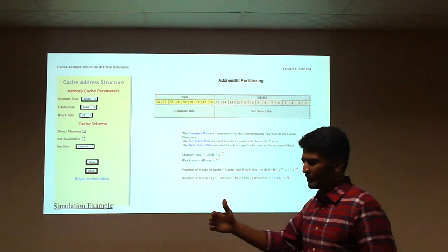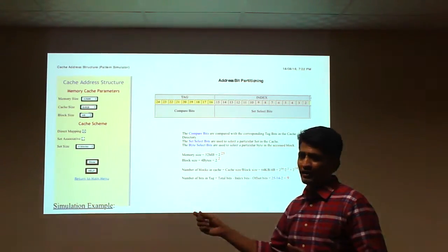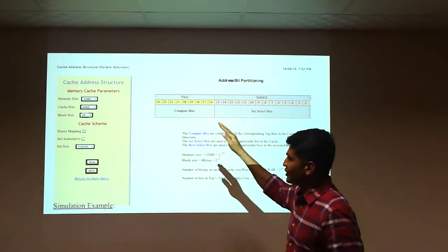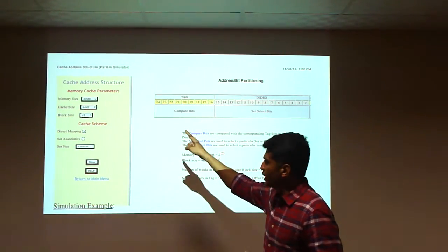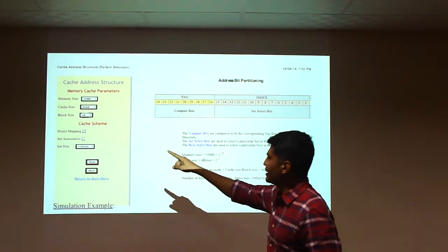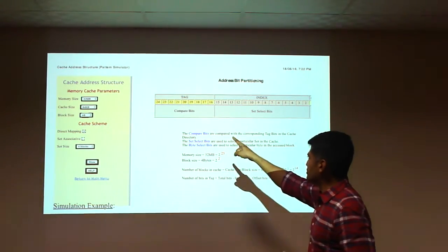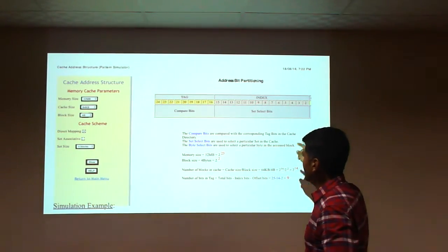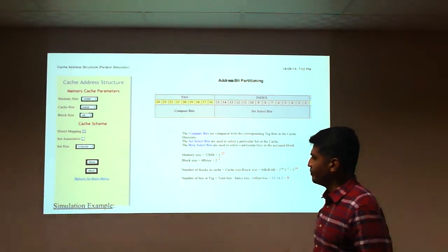The next slide shows a simulation example from an educational website, whose URL link is provided with this video. The simulator uses: main memory size of 32 MB, cache size of 64 KB, block size of 4 bytes, and the mapping scheme is direct mapping. You can see the tag bit, index bit, and offset bit in the cache address structure.